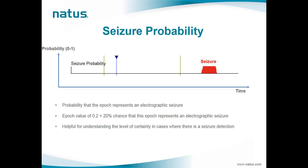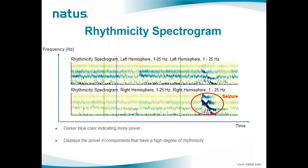Since the seizure detection probability function is validated at discrete values of 0.0, 0.2, 0.4, and so on up to 1.0, only those discrete values are presented. The rhythmicity spectrogram trend is often displayed separately for the left and right hemispheres, but may be modified to display individual channels or groups of channels. It is very similar to the color density spectral array or FFT spectrogram trend, with time on the x-axis and frequency on the y-axis, and power displayed by color coding — darker blue indicating more power.